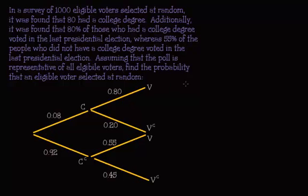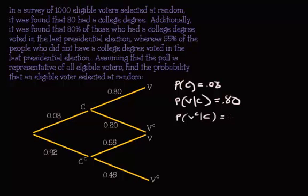Now that the tree diagram is filled out, I just want to summarize using all the set notation that we've learned up to this point. So the probability of someone having a college degree was 0.08. The probability that you voted given you had a college degree, that's 0.80, that's this number right here. Which means that the probability that you did not vote given you had a college degree would be 0.20.